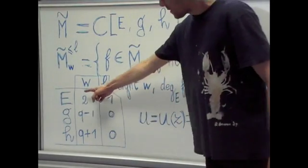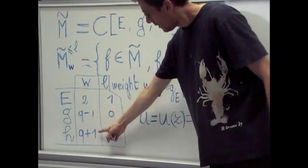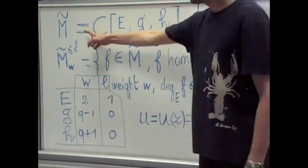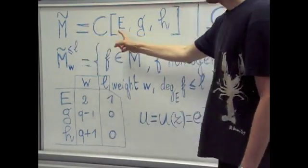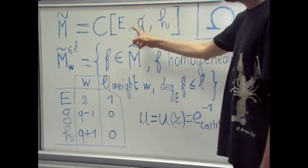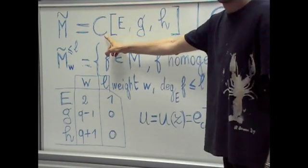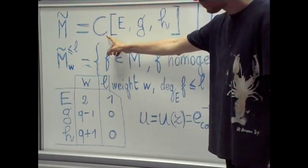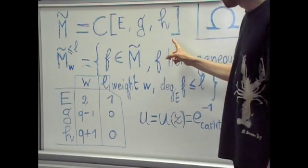The weights of E, G and H define a grading on M-tilde, the polynomial algebra in E, G, H with coefficients in C. This algebra has dimension 3.